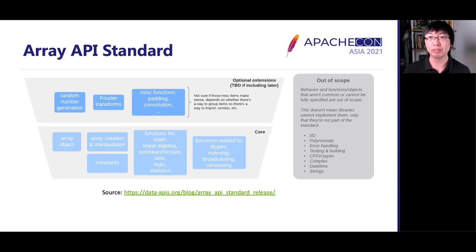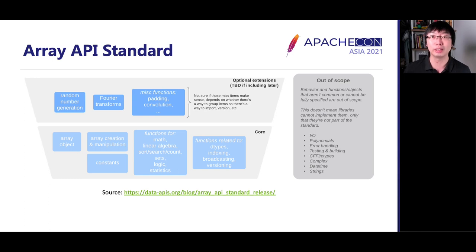Recently, we released the first draft of the Array API standard. The scope focuses on the core functionality of an array library, as shown at the bottom. We intentionally left out items that are not common or cannot be fully specified, to ensure we can focus on a scope we can agree on and ensure community adoption. Later, there will be additional optional extensions we may include, such as neural network operations.